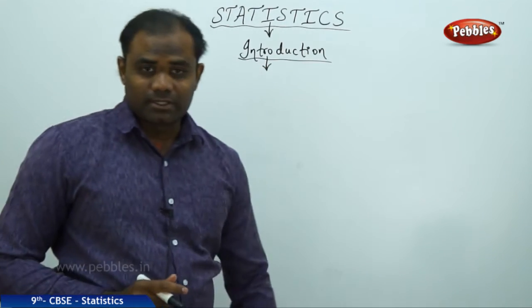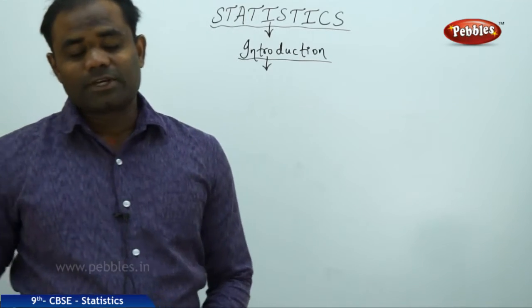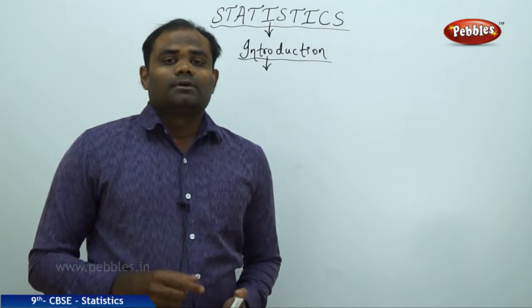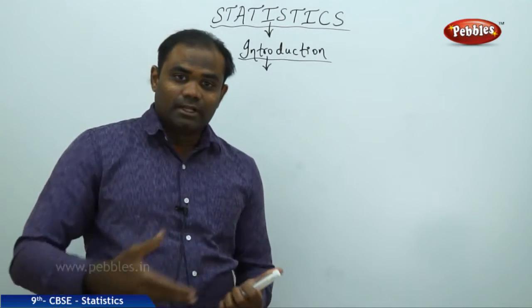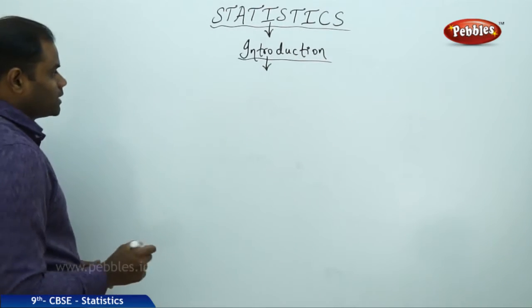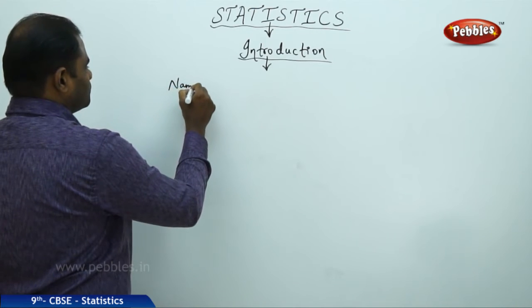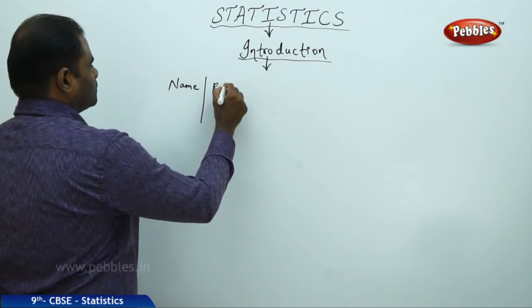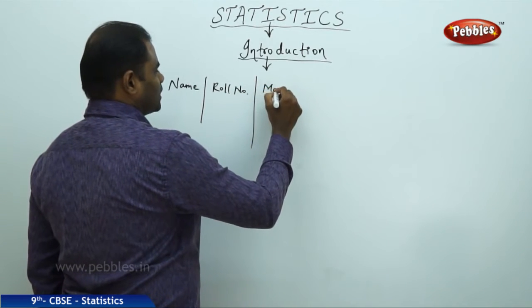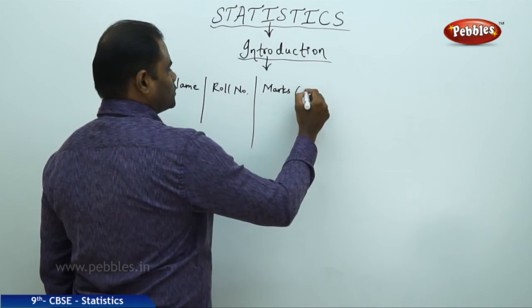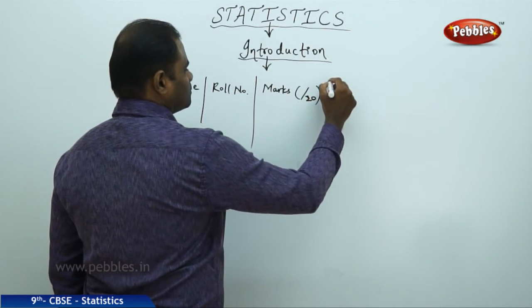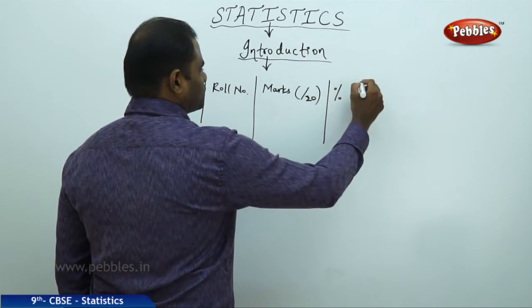In general sense, let's take a real-life situation where the teacher makes a list of all the marks of the students name-wise. For example, I have the name, the roll number, marks calculated out of 20, and the percentage of those marks.